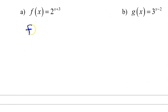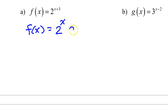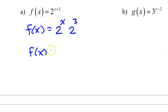For Part A, we can rewrite this as f of x equal to 2 to the x times 2 to the third power. 2 to the third power is 8, and we can take that 8 and put it in the front.